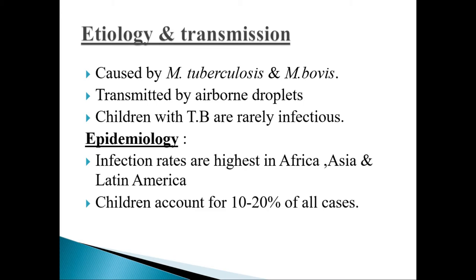Epidemiology: infection rates are highest in Africa, Asia and Latin America. In these countries, poor socioeconomic status, poor nutrition and overcrowding are considered risk factors for tuberculosis. In developed countries, tuberculosis is found mainly in HIV patients. Children account for 10 to 20% of all tuberculosis cases.